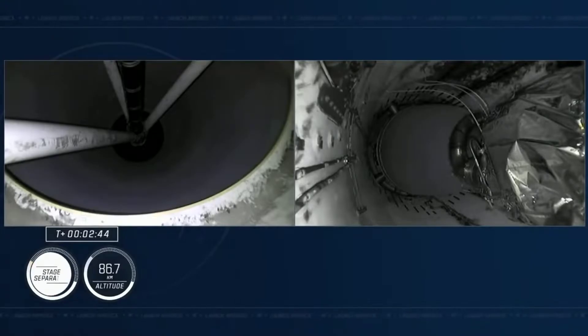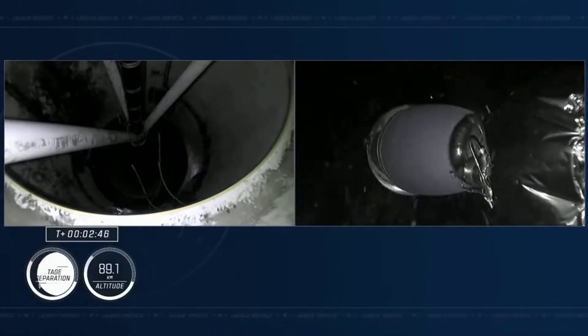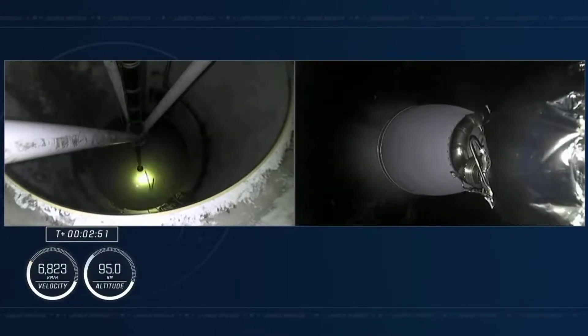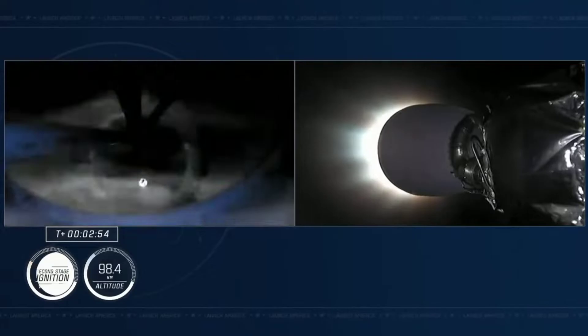We heard that MVAC chill has started. Stage 1, throttle down. The nine Merlin engines starting to throttle down. And standing by for MECO. And MECO. Stage separation confirmed. So MECO, stage separation is confirmed. And ignition.